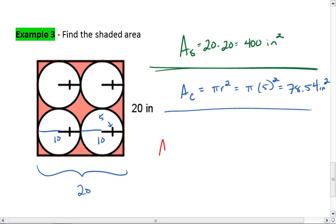Lastly, the area of our shaded region is going to be the area of the entire square minus 4 of the areas of the circles. We get 400 minus 4 times 78.54.